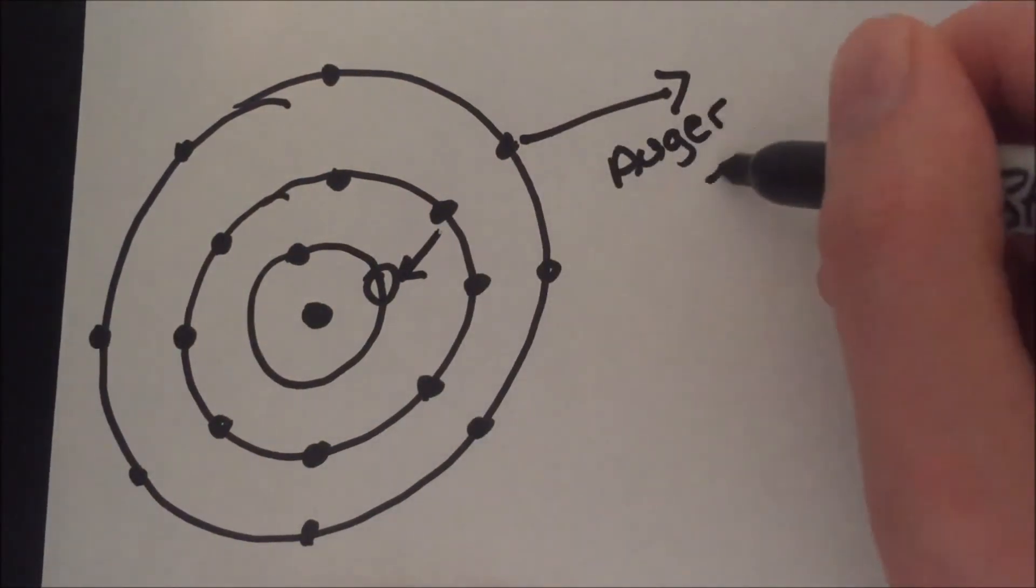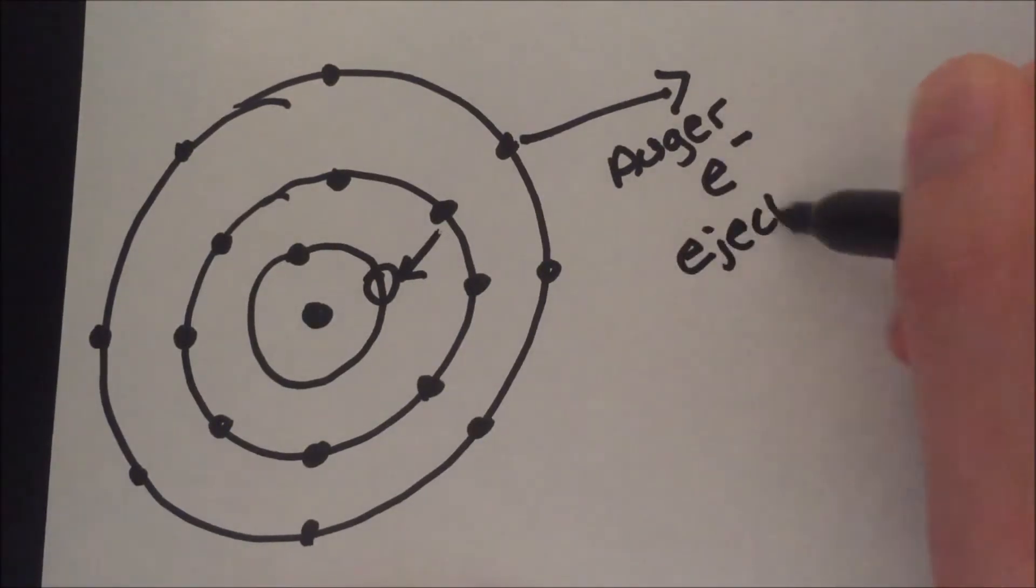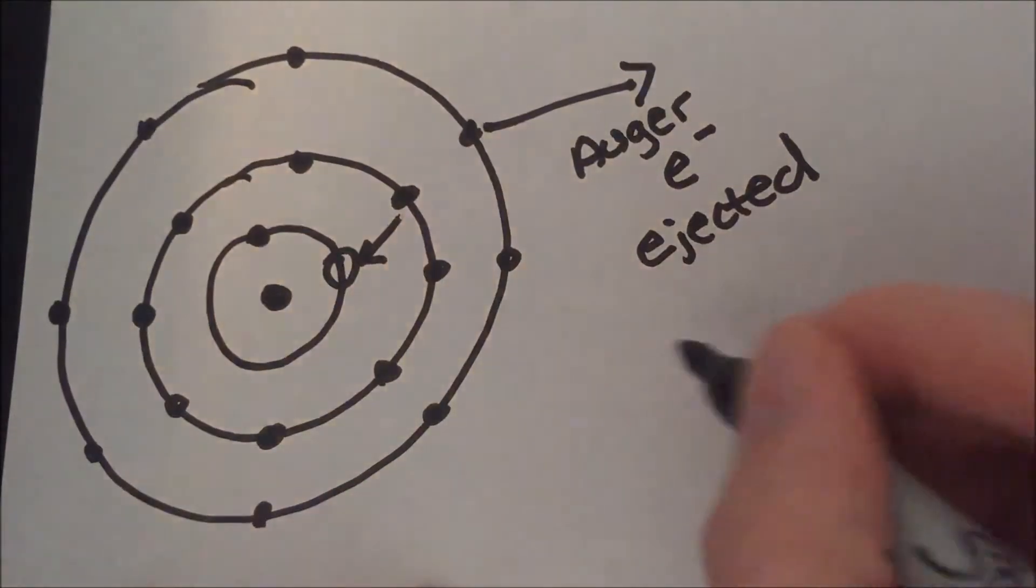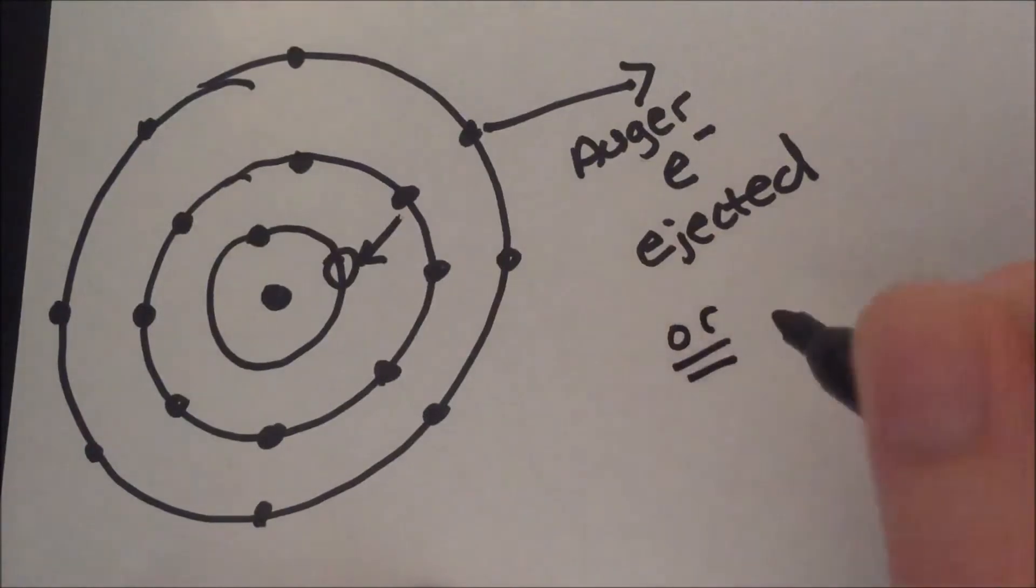Releasing the difference in energy in the form of an ejected higher-energy electron. This ejected electron is termed an Auger electron.